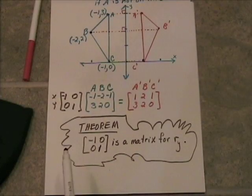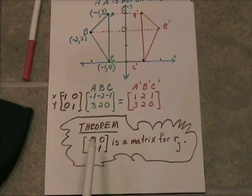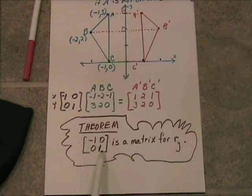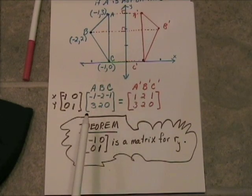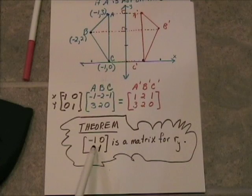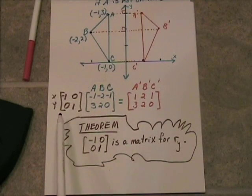Alright, so to formalize this up a little bit, we have a theorem. And it says that this matrix right here, the one we've used here to reflect, if you take this point matrix and multiply it.